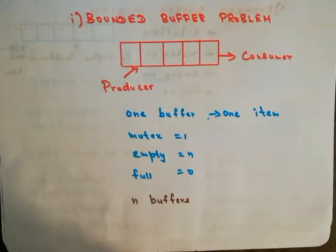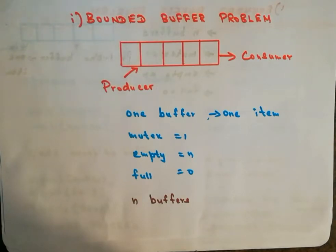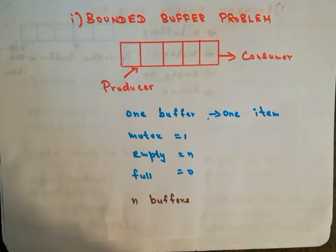Hello everyone, welcome back. In this video we will see about the classic problems of synchronization. There are basically three classic problems of synchronization: the first one is the bounded buffer problem, also called the producer-consumer problem; the second one is the readers-writers problem; and the third one is the dining philosophers problem.